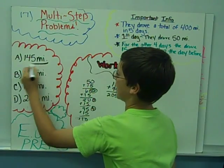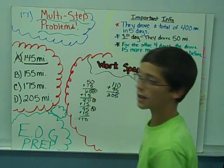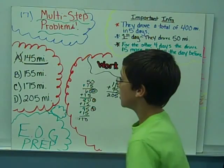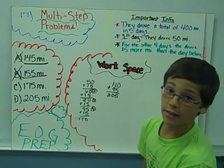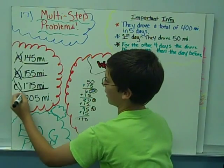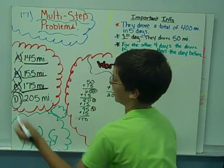This is 145, that is less, so that's not an answer. 155, which is not less, so 175, which is less, and so that would leave you with D, 205.